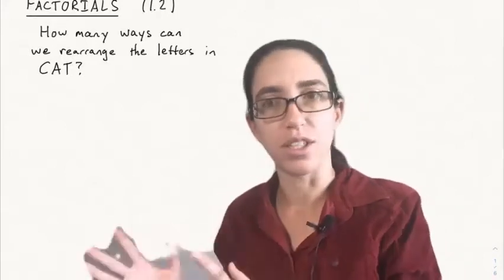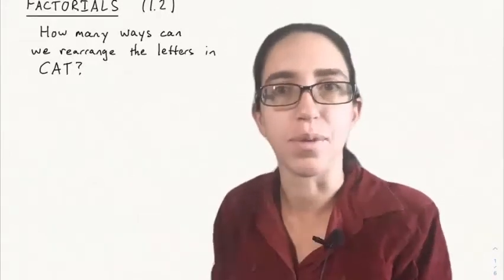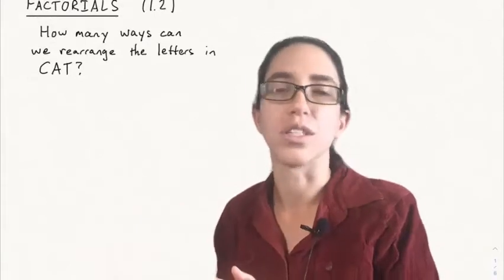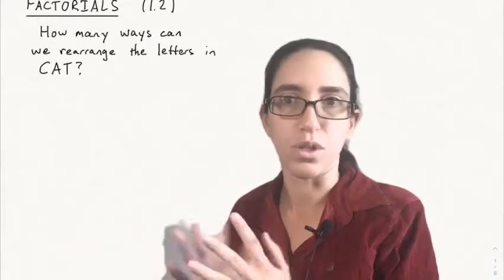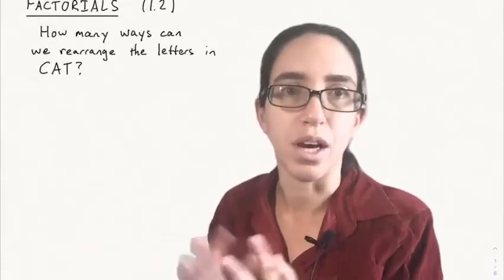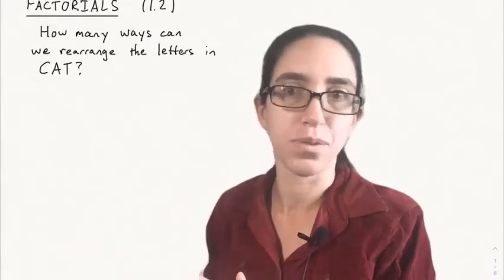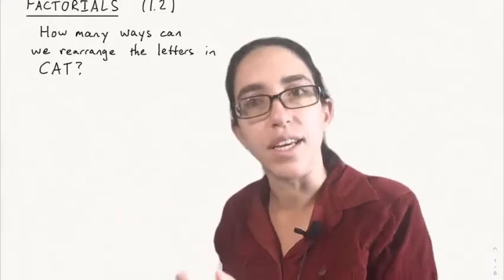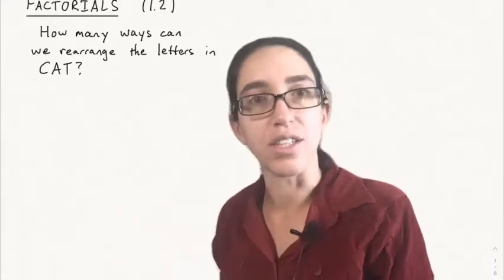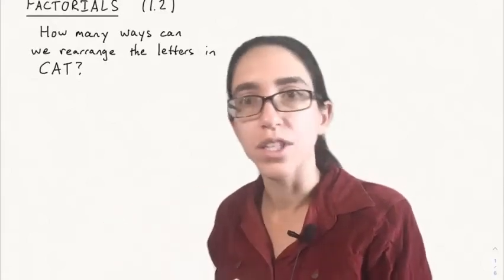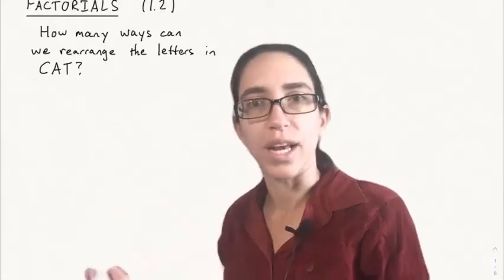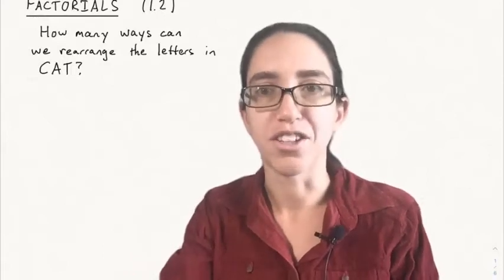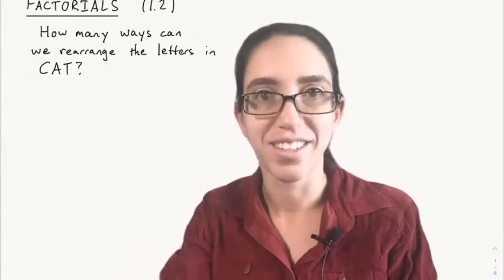But now we're just going to start with a big overview of where factorials appear, what you can do with them, and why they're important. One big place they come up is in arranging things in order. For instance, how many ways can we rearrange the letters in the word cat?